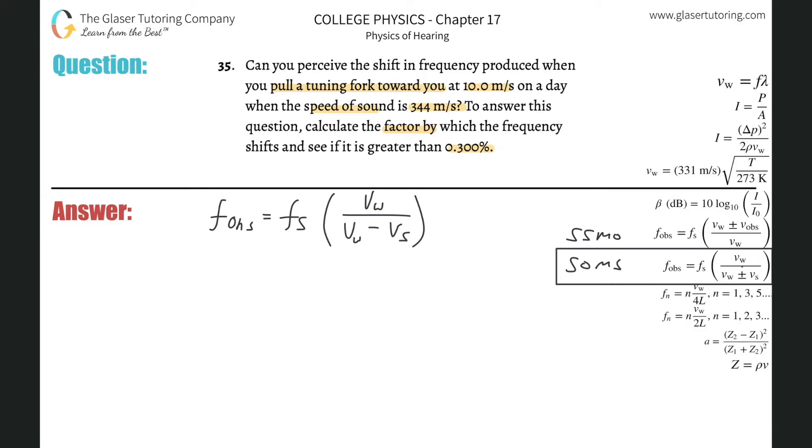Let's calculate this fraction. The frequency of the observer equals the frequency of the source multiplied by the velocity of sound, 344, divided by 344 minus 10. So the frequency of the observer equals the frequency of the source multiplied by... 344 divided by 334 works out to be 1.03.